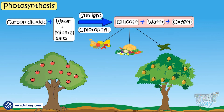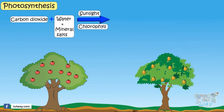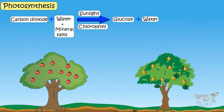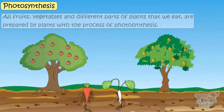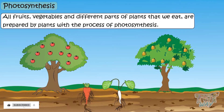So in this process, plants use carbon dioxide, water, and minerals in the presence of sunlight and chlorophyll to make glucose, which is stored as edible parts of the plant. Plants also release some water in the form of water vapors and oxygen into the air. All fruits, vegetables, and different parts of the plant that we eat are prepared by plants through the process of photosynthesis.